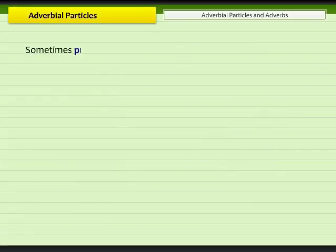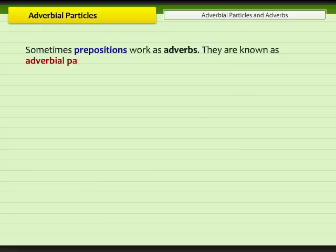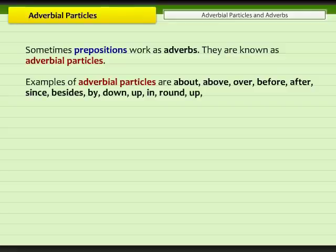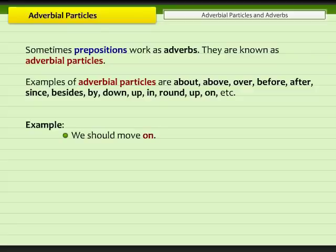Sometimes prepositions work as adverbs. They are known as adverbial particles. Examples of adverbial particles are: about, above, over, before, after, since, besides, by, down, up, in, round, on, etc. For example, in the sentence 'we should move on,' the word 'on' acts as an adverb. Therefore, it is an adverbial particle.